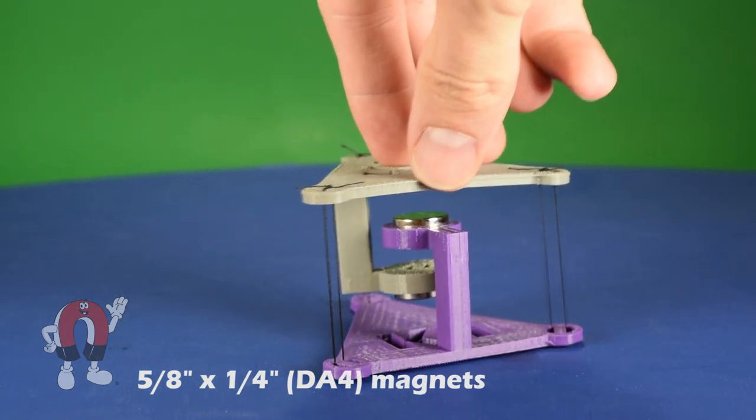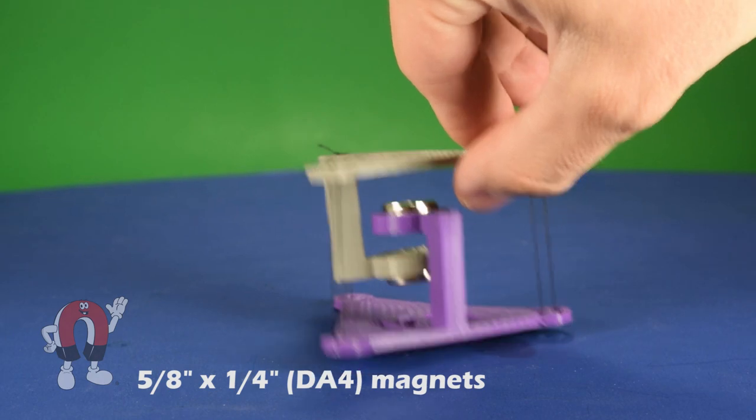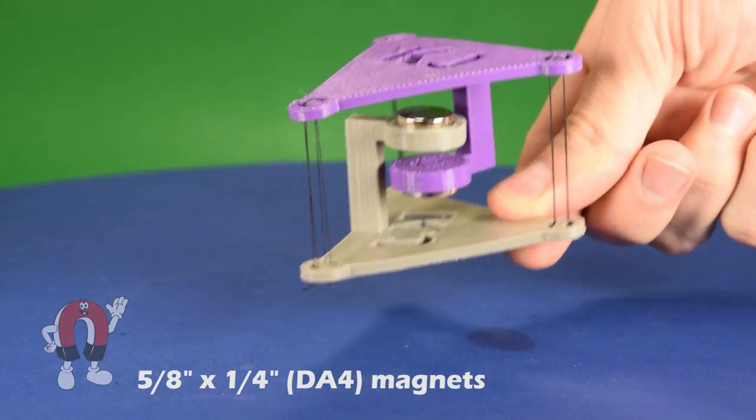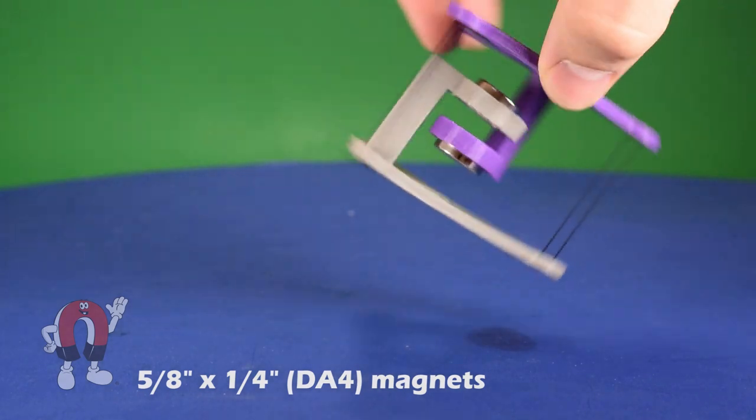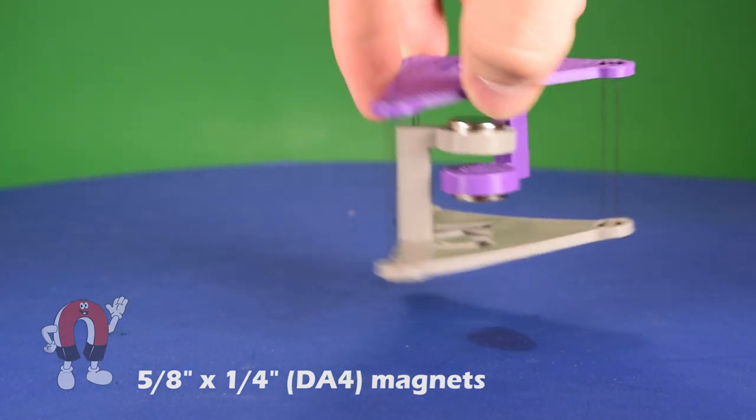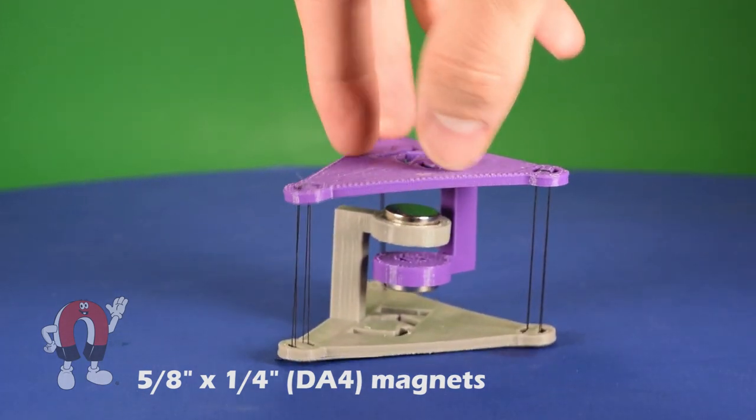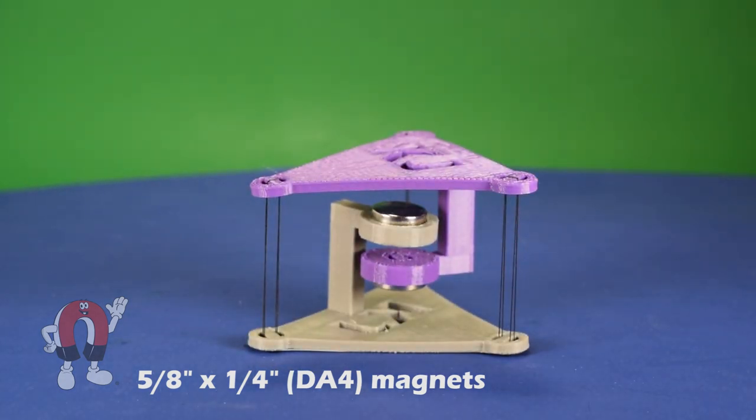With this table, the load we can put on top is limited by how much the magnets are attracting to one another. If we push down with more than that force, the magnets move farther apart, the attraction force drops, and the table collapses.